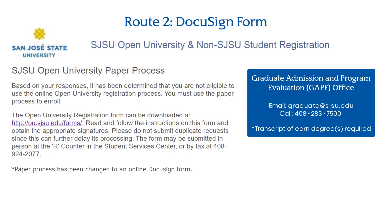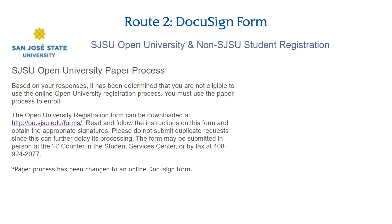If you are a graduate student seeking a graduate level class, you must have approval from the Graduate Admissions and Program Evaluation Office, also known as GAAPE. You can email GAAPE with your intent to enroll in a 200-plus level class. Please note that you will be required to send a transcript of your earned degrees to GAAPE and the Registrar's Office. To submit an online DocuSign registration form, continue to the next part of the tutorial series.